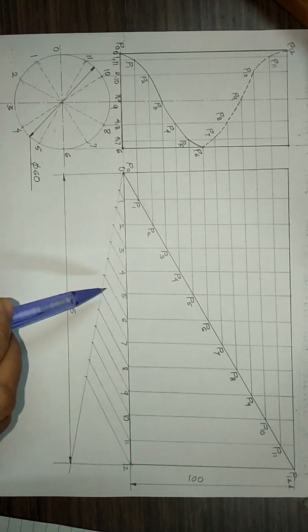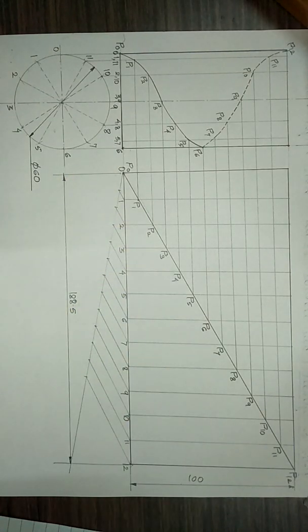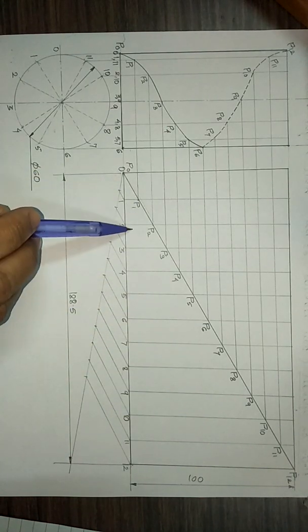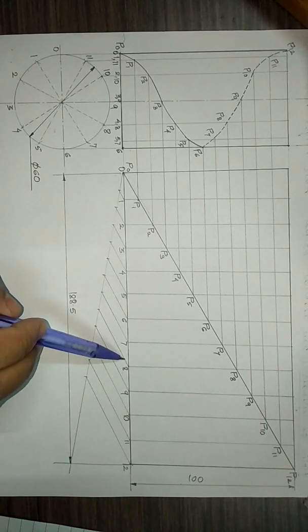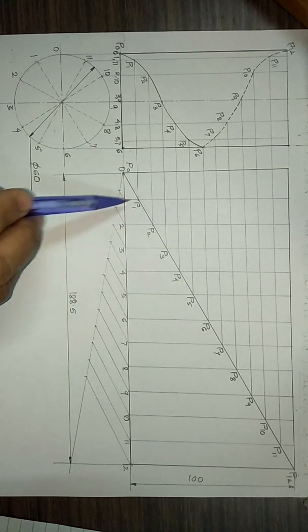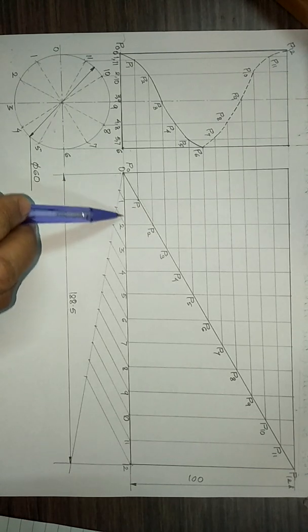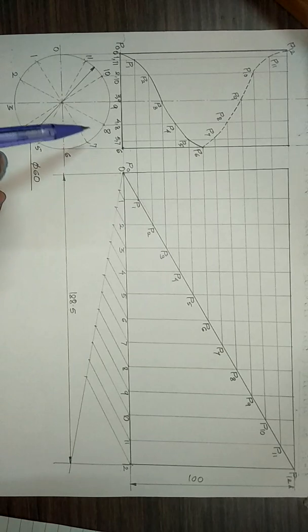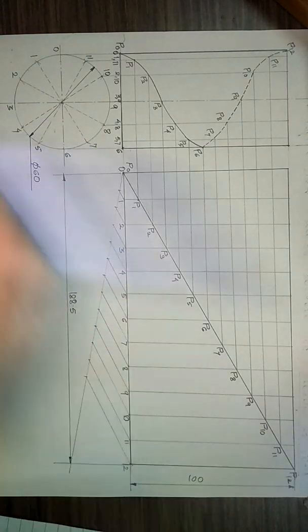The next step, we have drawn the diagonal for this rectangle. The points where these vertical lines intersect the diagonal, we have named them as p1, p2, p3 and so on. The p1 point is formed by the intersection of the vertical line from point 1 to the diagonal.